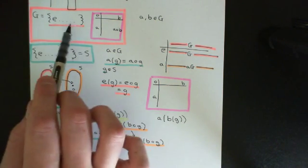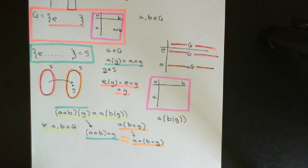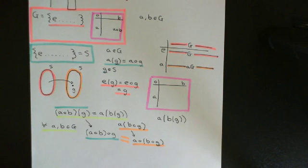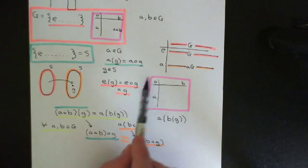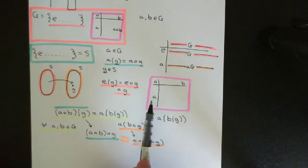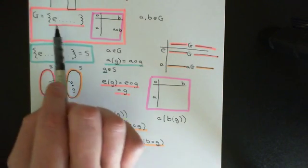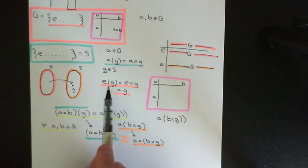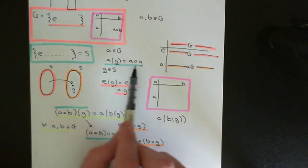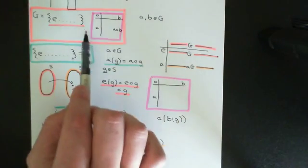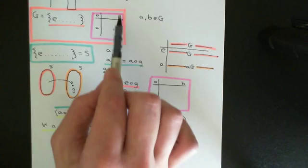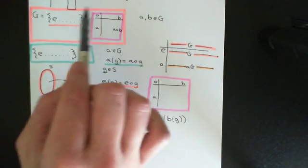That means every element of the group can be associated with a set permutation of the set of symbols, which is the set of symbols of the group itself. What's incredible about this is that the composition law you would get if you defined composition of the set of symbols by the composition of the set permutations just defined is exactly the same as the composition law that the group originally had.